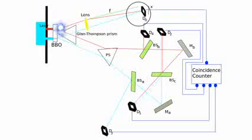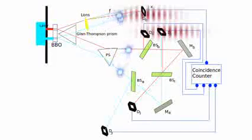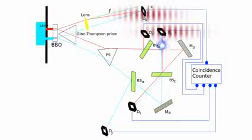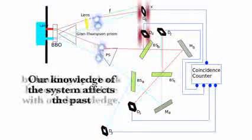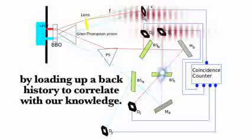So if the twin hits D3 or D4, D0 will always register a clump pattern to correlate, and always an interference pattern if its twin lands at D1 or D2. So either the photon has a highly complex computer built into it so it can know the future, or we have an idealistic picture of reality. And our knowledge of this system affects the past by loading up a back history to correlate with our knowledge.